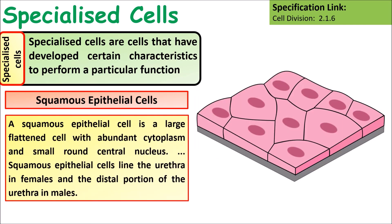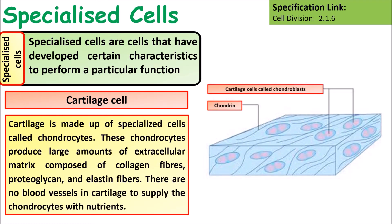Squamous epithelial cells are large, flattened cells that cover many different surfaces within the body. Cartilage is made up of specialised cells called chondrocytes. These cells produce large amounts of extracellular matrix composed of collagen fibres and elastin fibres. There are no blood vessels in cartilage to supply the cells with nutrients.